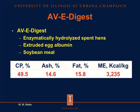A new product on the market is called AVE Digest. AVE Digest contains enzymatically hydrolyzed spent laying hens from the laying industry, and extruded egg albumin is also included, which is then mixed with high-protein soybean meal. The concentration of crude protein is 49.5%, there is 14.6% ash, 15.8% fat, and the energy concentration is 3,235 kcal of metabolizable energy per kilogram. AVE Digest is relatively new in the marketplace but is also used as a replacement for fish meal in diets fed to weanling pigs.